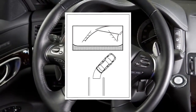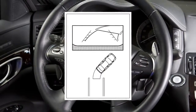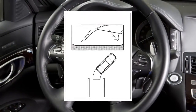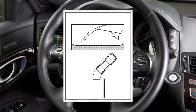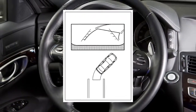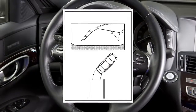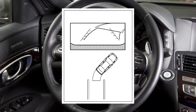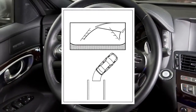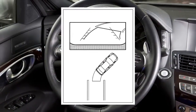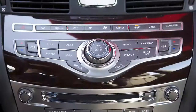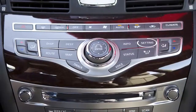When the steering wheel is turned, predictive course lines are also displayed on the screen. These lines show the approximate path the vehicle will take when backing up. The predictive course lines move in conjunction with how far the steering wheel is turned.